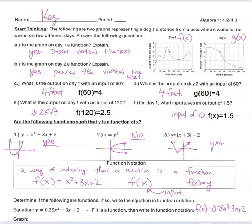So there is an issue here. Looking at that first part with the graphs, this seems super inefficient — using a lot of words like 'what is the output on day one if the input is 60?' There's just too many words. And on the second part, when looking at equations to figure out if they're functions, it's not efficient to have to graph it every single time. So when there is a need, mathematicians come up with something to fill that need — there's got to be a way to denote that something is a function without having to check every time.